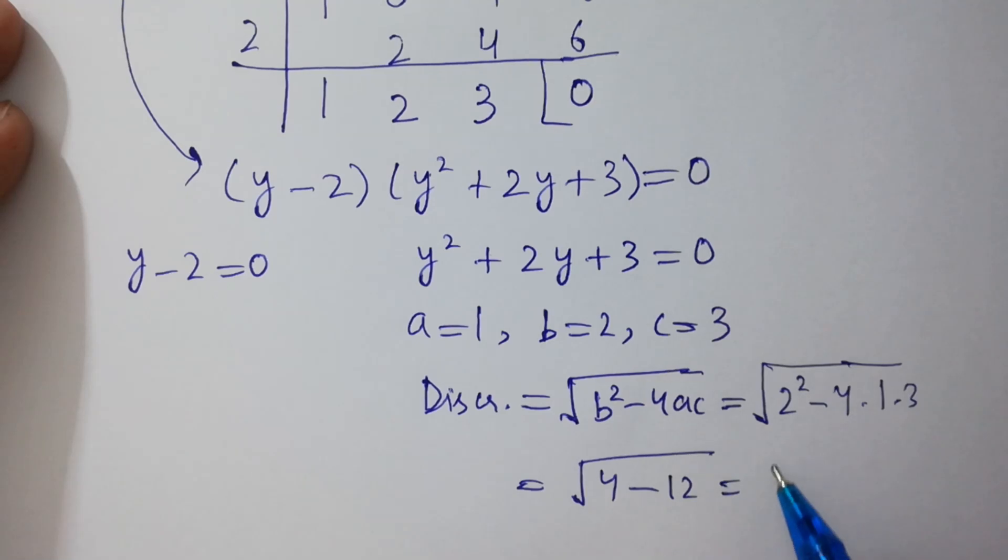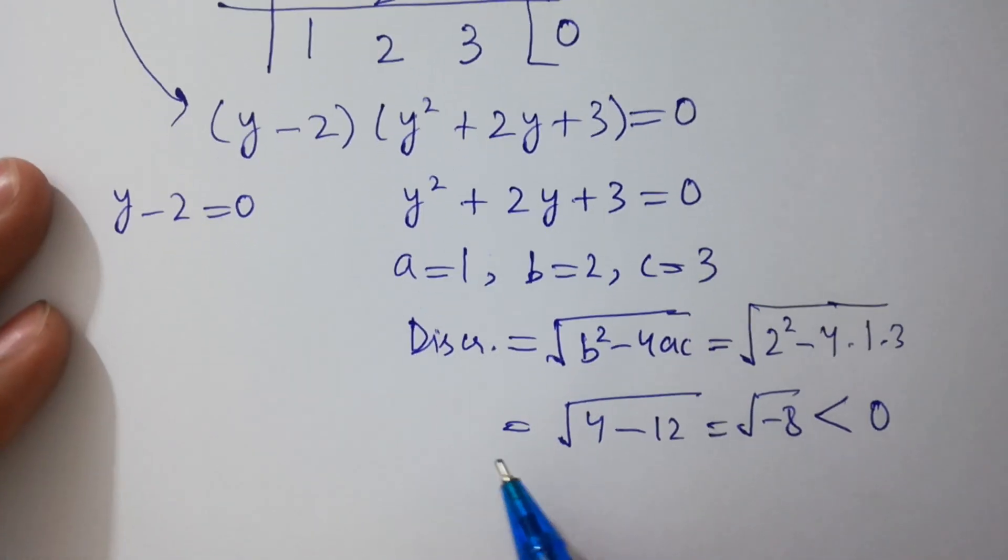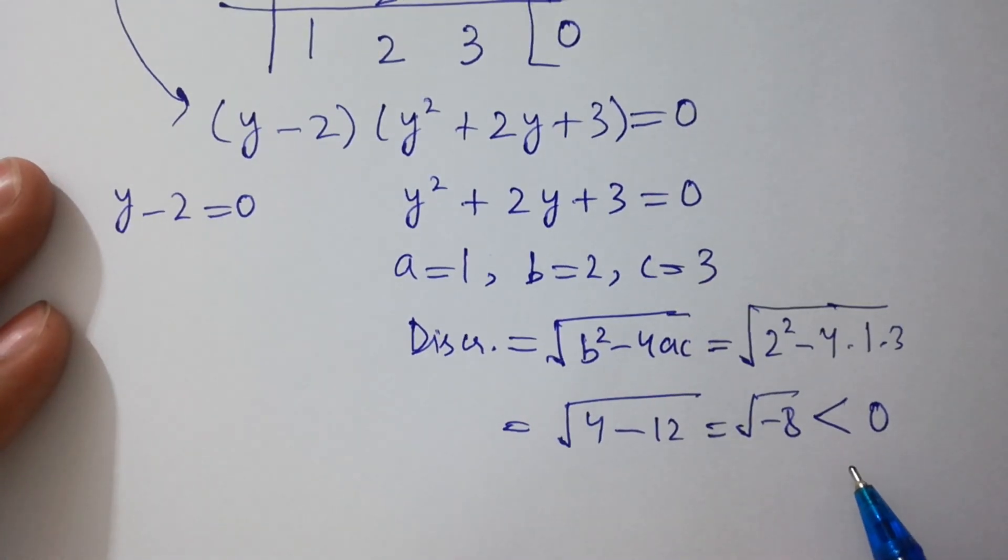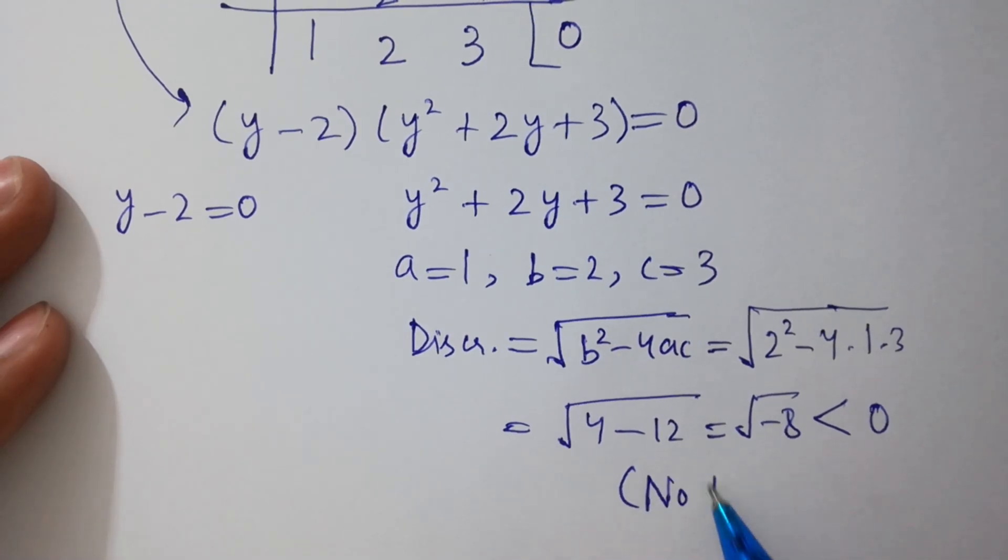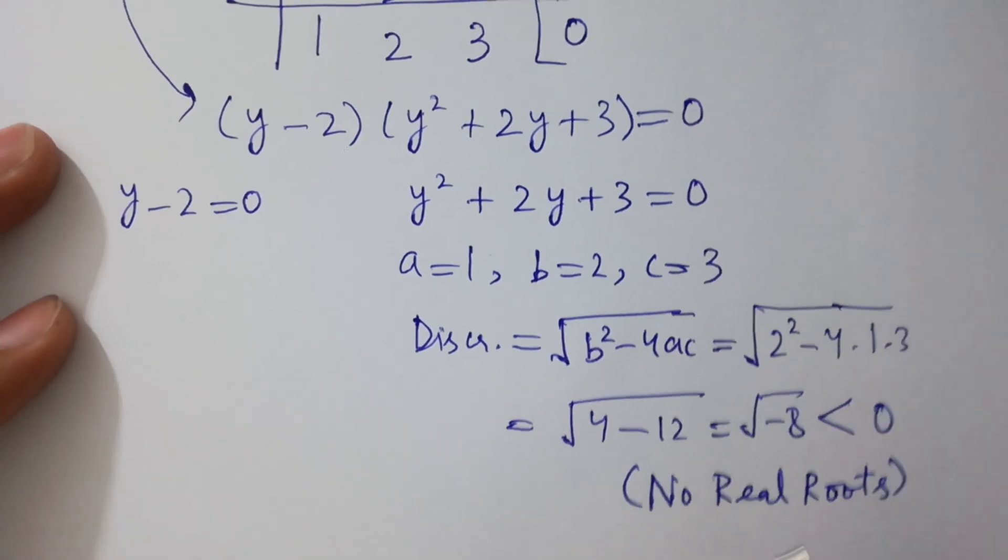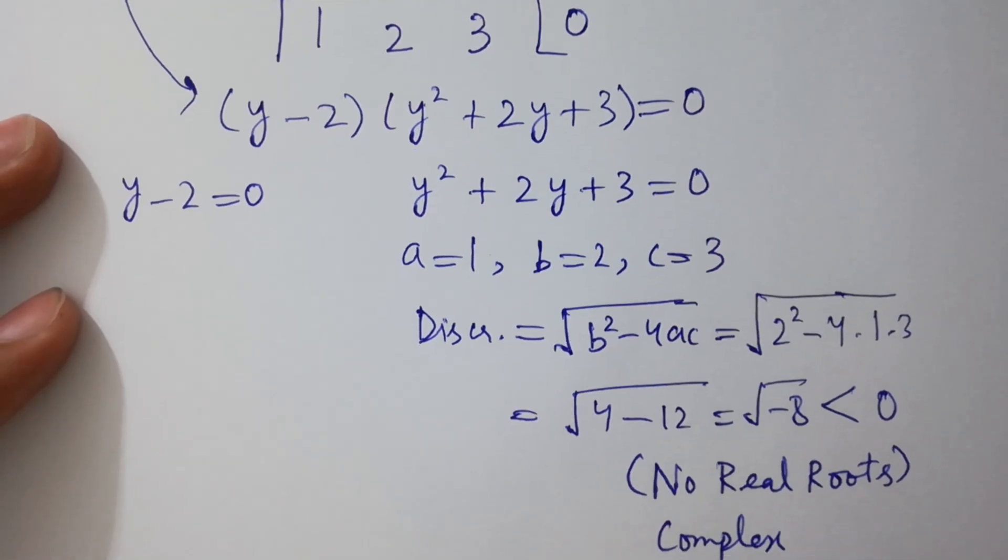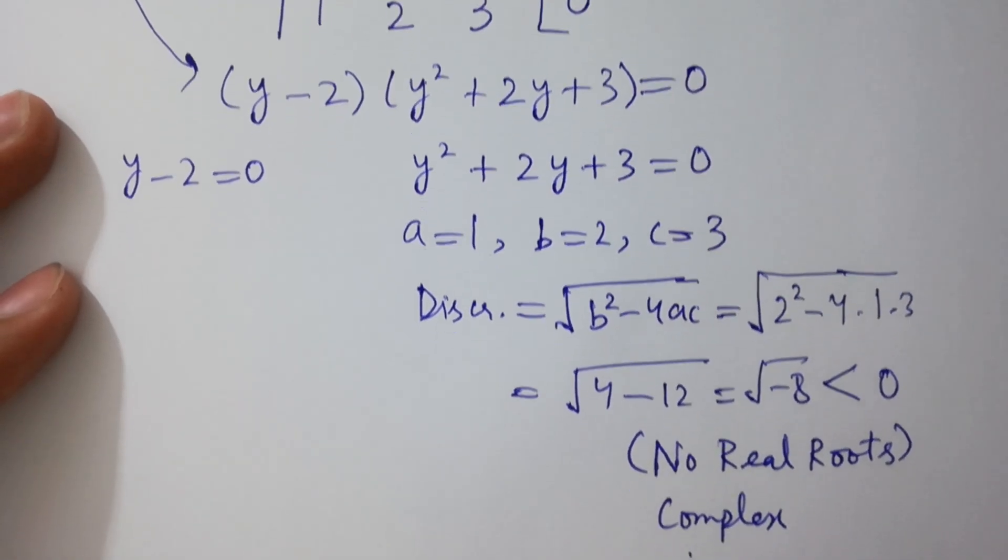12, 4 minus 12, minus 8, which is less than 0. Since discriminant is less than 0, so it has no real roots, only complex solution, so we can neglect it.